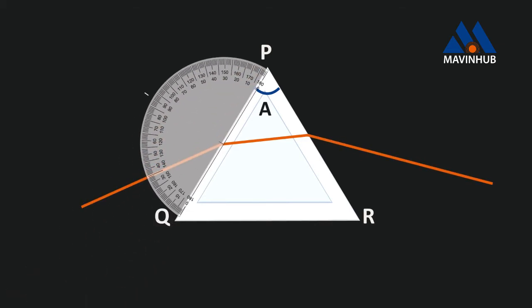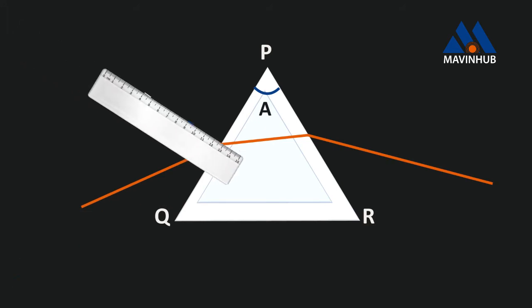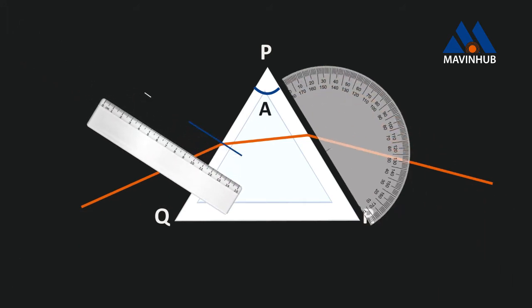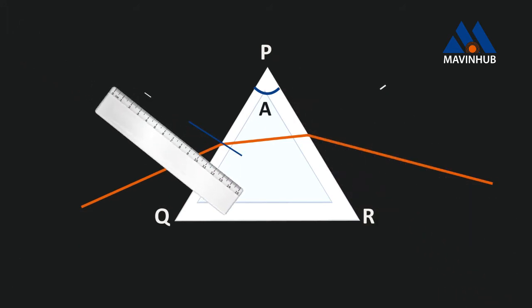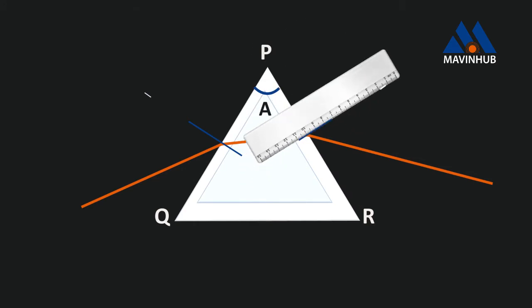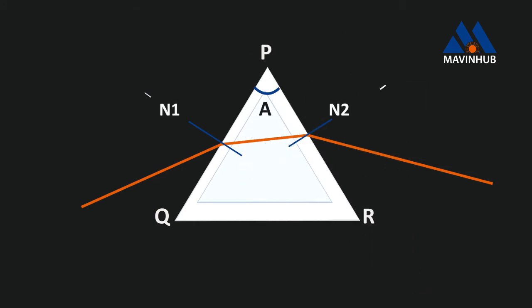Let's draw vertical lines at the point of incidence and refraction. These lines are called normals. Let's call them N1 and N2.